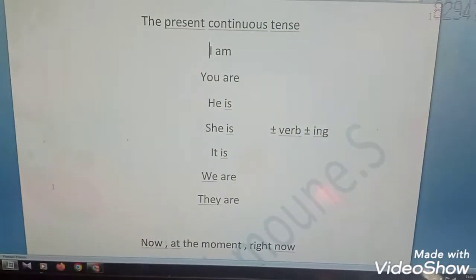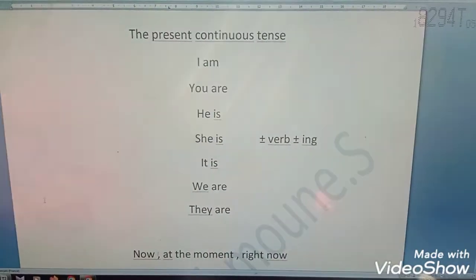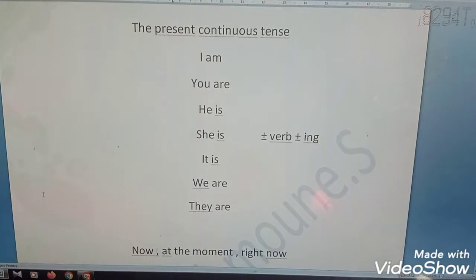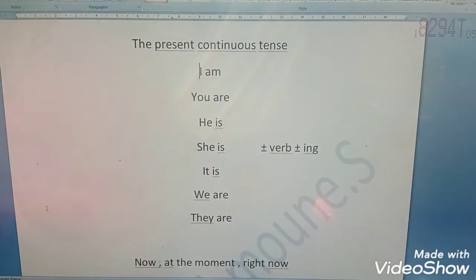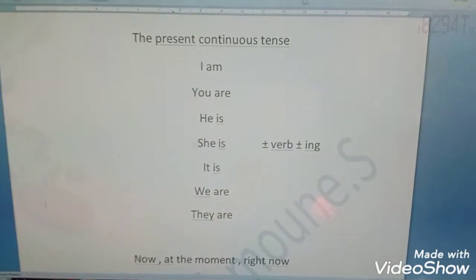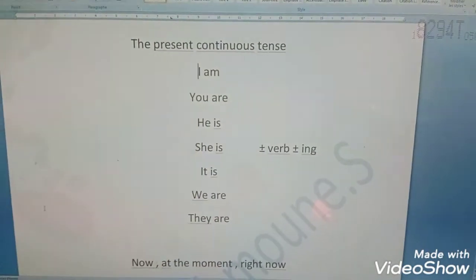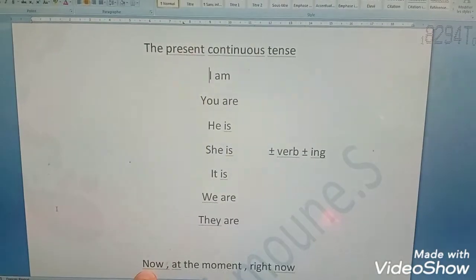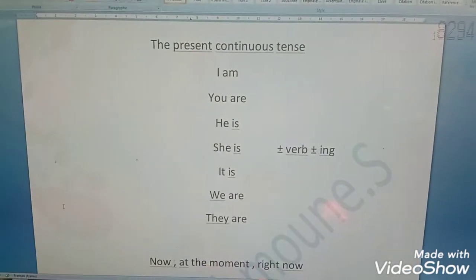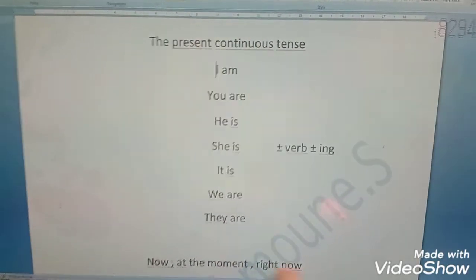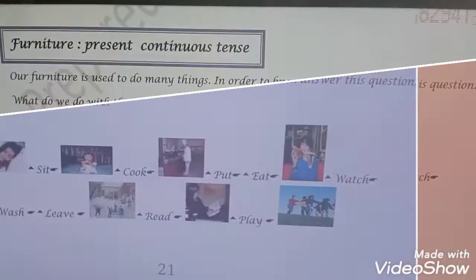Why do we use the present continuous tense? When we talk about something happening at this moment, right now. For example, it is five o'clock — you say 'at five o'clock I'm sitting.' With time markers like 'at the moment,' 'now,' or 'right now,' we use the verb in the present continuous.